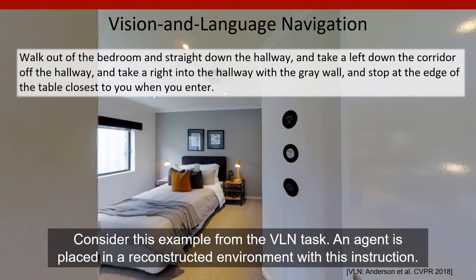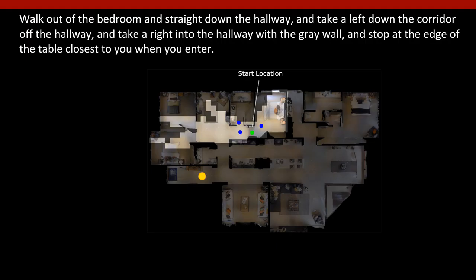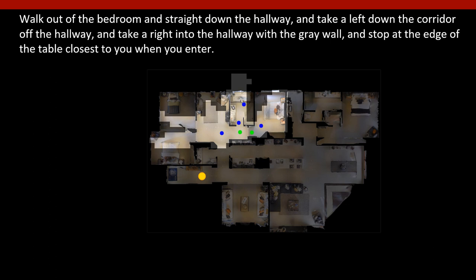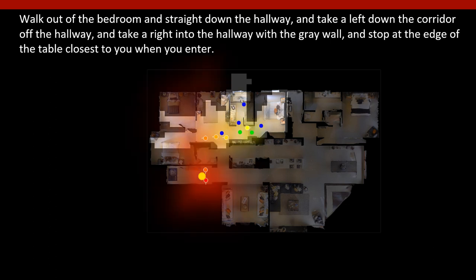Consider this example from the vision and language navigation task. Here an agent is placed in a reconstructed environment and given this complex instruction: walk out of the bedroom and straight down the hallway, take a left down the corridor off the hallway, take a right into the hallway with a grey wall, and stop at the edge of the table closest to you when you enter. Viewing this environment from the top, the agent's start location is shown here in green and the goal location is here in gold. As the agent moves it builds a map shown by these lighter colored pixels, and at each step computes a belief over the most likely trajectories that might lead to the goal, before selecting an action, moving to update the map, and then iteratively re-computing this belief at each step.